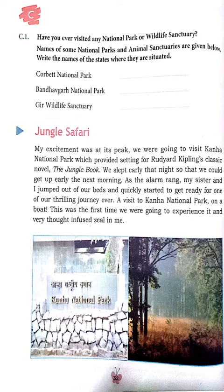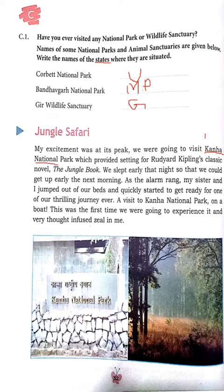Names of some national parks and animal sanctuaries are given below. We have to write the names of the states where they are situated — not the place names, just the states. The Corbett National Park is in Uttarakhand. Bandhavgarh National Park is in Madhya Pradesh. Gir Wildlife Sanctuary is in Gujarat. Kanha National Park is also in Madhya Pradesh.